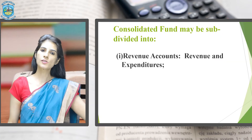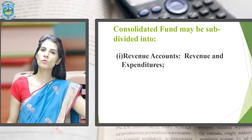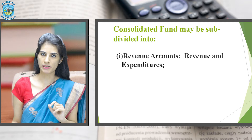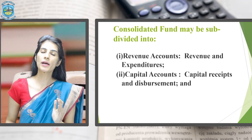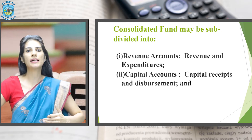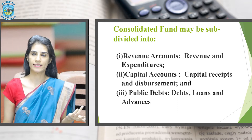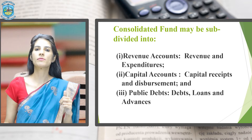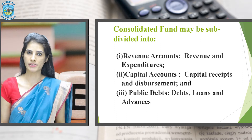When you talk about the Consolidated Fund of India, it will have three bifurcations. The first one is Revenue, where we discuss the revenues and expenditures of the Government. The second one is the Capital Account, where we discuss the capital receipts and capital disbursements of the Government. And the third one is the Public Debt, where we discuss the loans, advances and the debts of the Government.